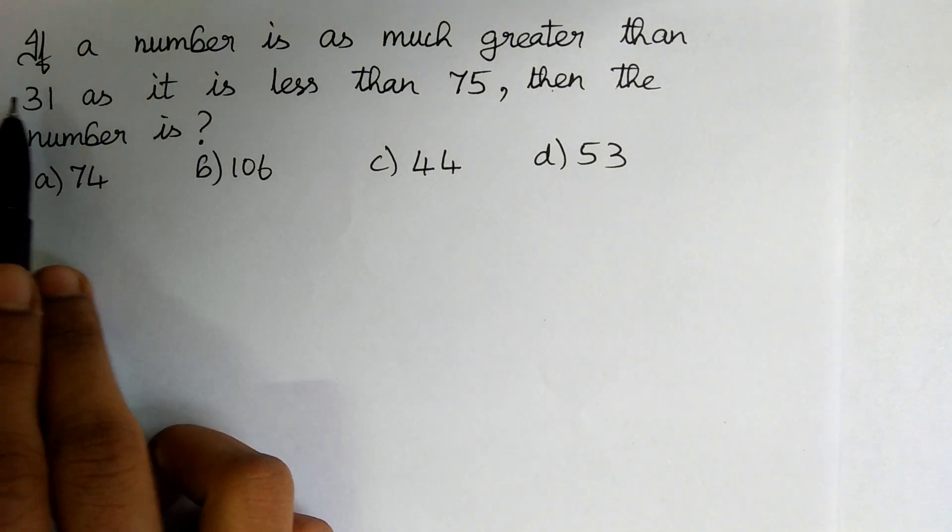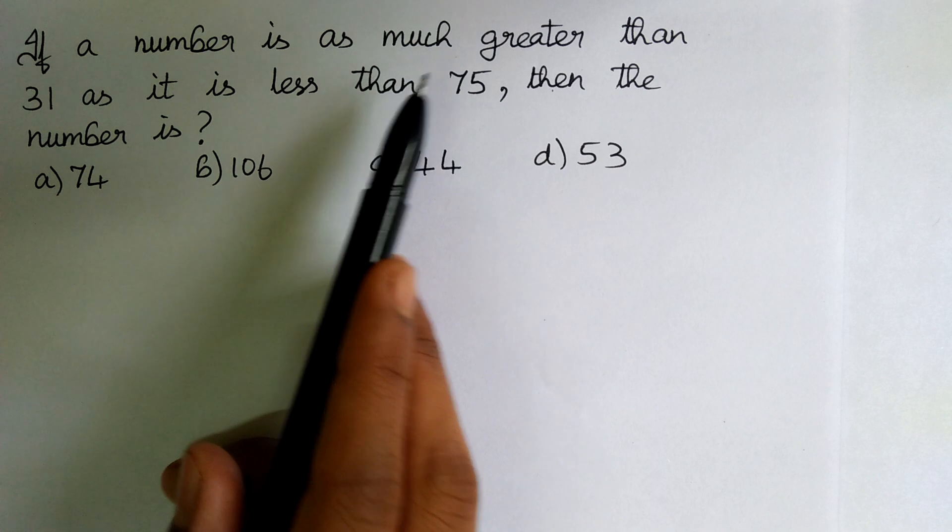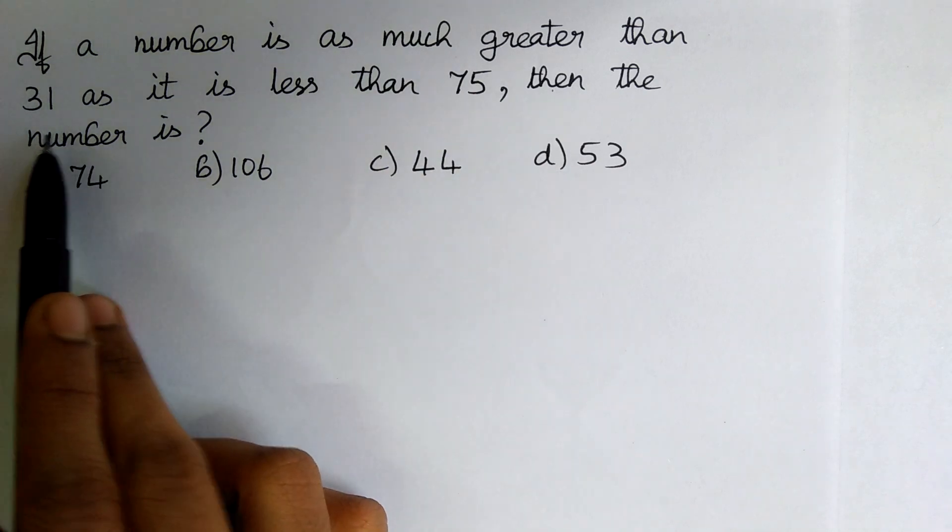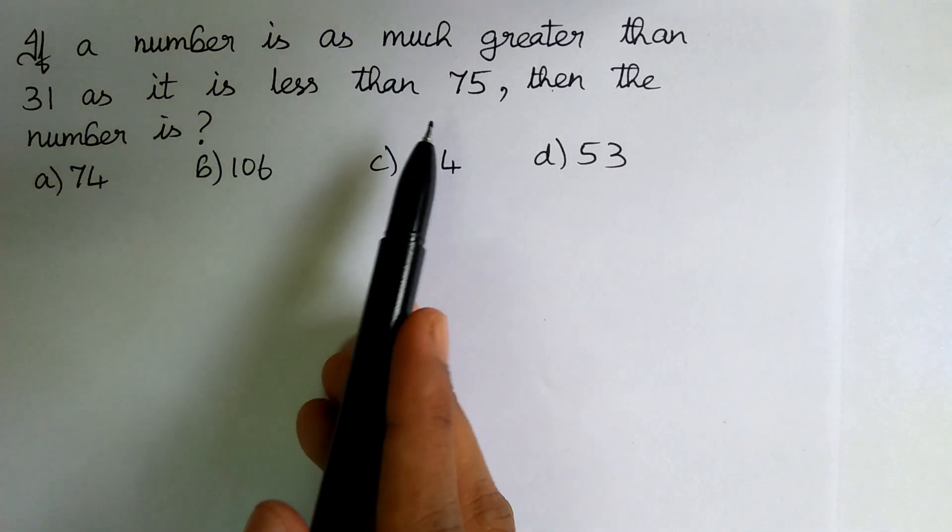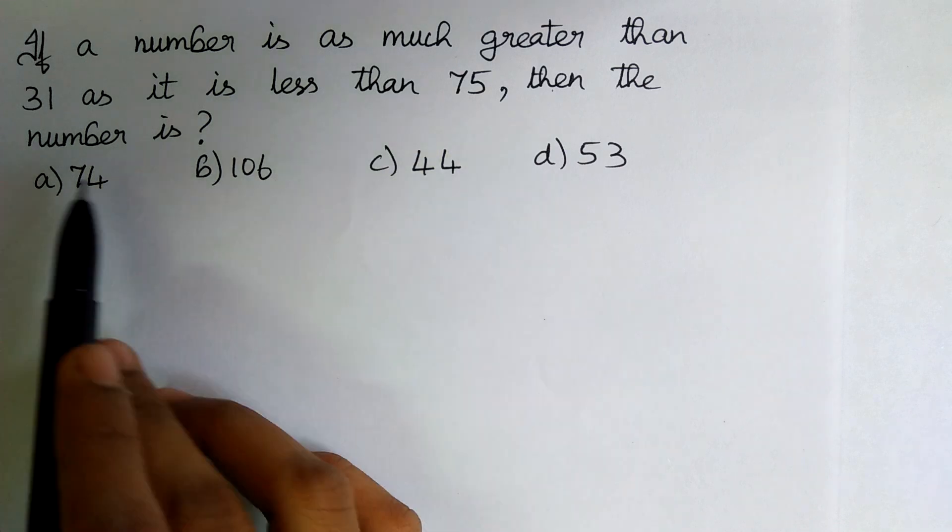The question is, if a number is as much greater than 31 as it is less than 75, then the number is?